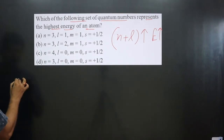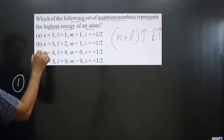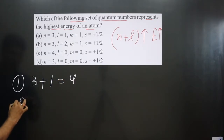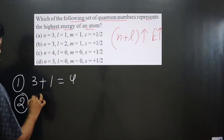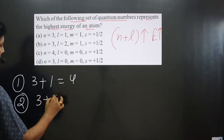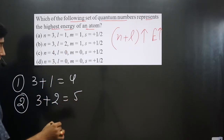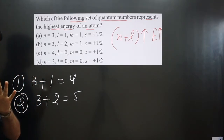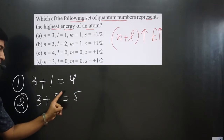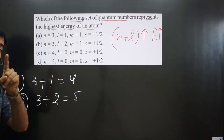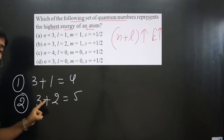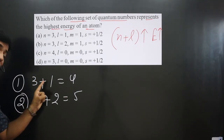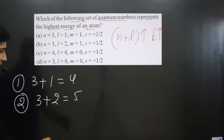Pay attention carefully. For the first option, we have n equals 3 and l equals 1, giving a total of 4. For the second option, we have n equals 3 plus l equals 2, giving us 5. Comparing the second set with the first, the n plus l value is higher for the second set, so the second set has higher energy than the first.